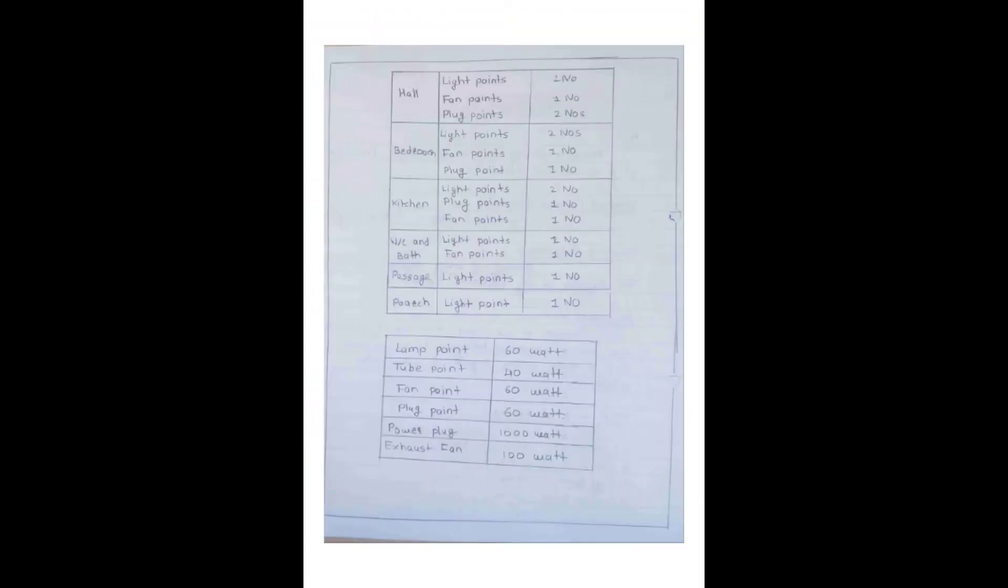After the aim, this is the relevant course outcomes, practical outcomes, and procedure. We calculate the total load. Consider a hall with one fan point, two block points, and two light points, and in the bedroom there are two light points, one fan point, and one block point.